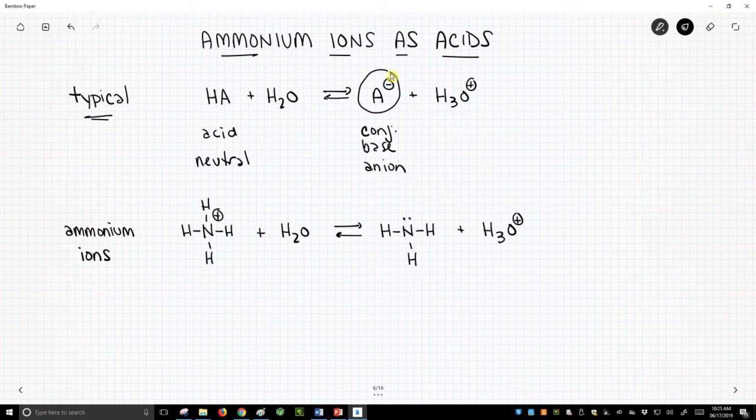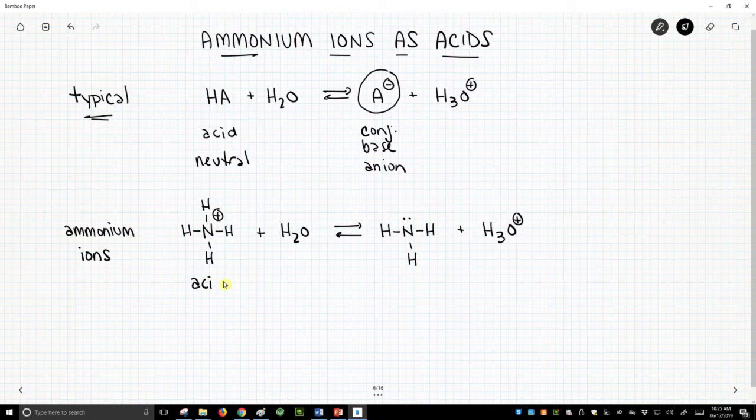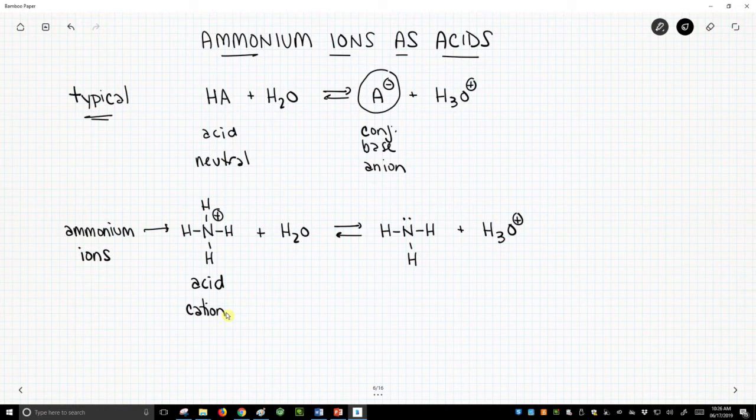Sometimes, however, we start with an acid like an ammonium ion, and this is called ammonium. And the acid is actually a cation. Now, in this case, when this acid loses H+, it will become a neutral species as the conjugate base.